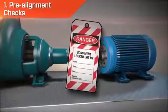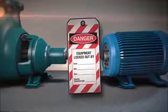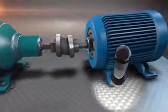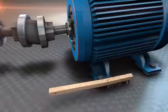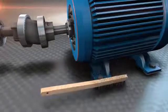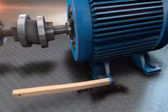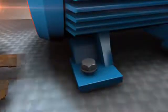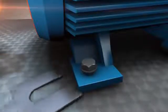First, we perform the pre-alignment checks, safety procedures, lockout and tagout of the machines, visual inspection of the foundation, grout and base plate. Cleanup. Remove rust, scale, paint and dirt from the bottom and around the feet. Replace damaged shim packs with new corrosion and crush resistant shims, filling obvious gaps under the feet.